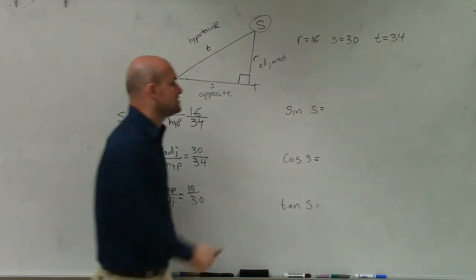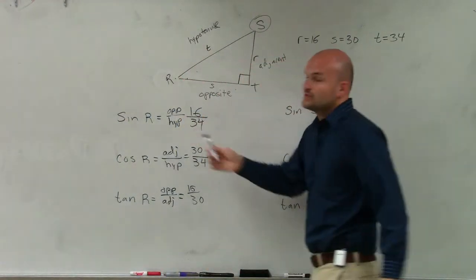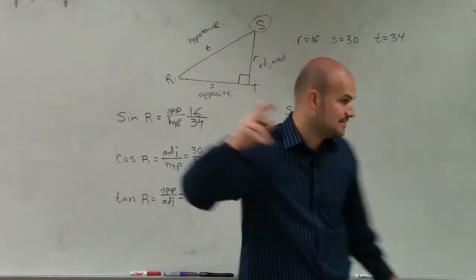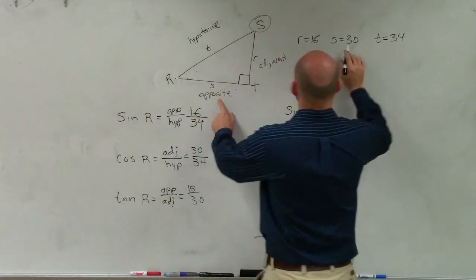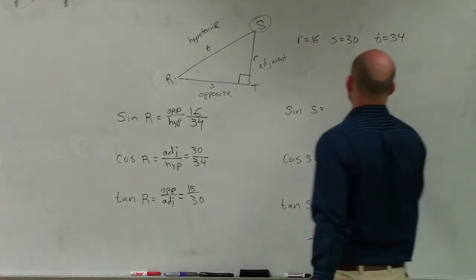If I say the sine of s, we know that the sine of s is opposite over hypotenuse. So, Damon, that's going to be? 30, which is opposite, which is s over hypotenuse. Very good.